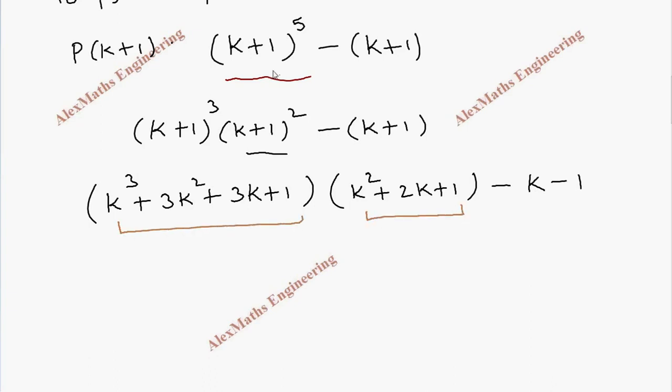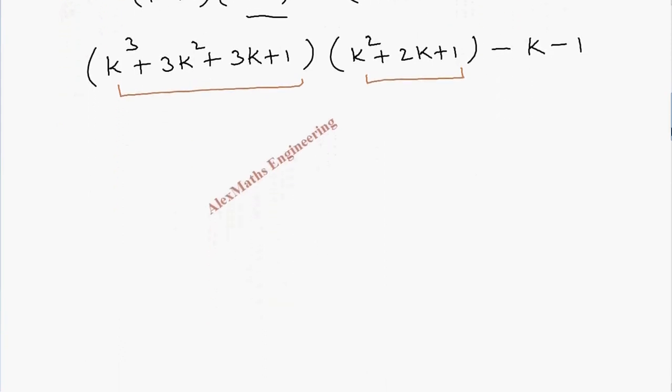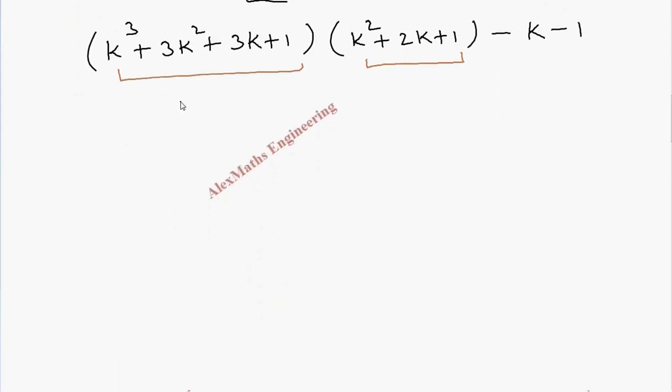We are going to expand and get 12 terms. I am going to do the expansion here: k^3 into k^2, so which is k^5, then k^3 into 2k gives 2k^4, then k^3. 3k^2 into k^2 will be 3k^4, and plus 6k^3, then plus 3k^2. And 3k into this will become 3k^3.